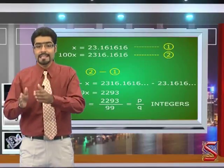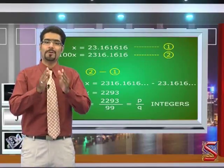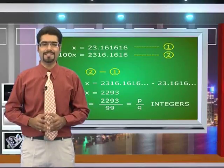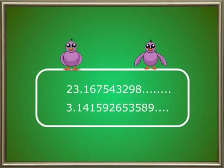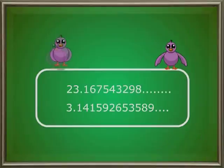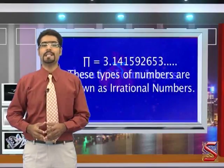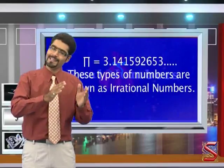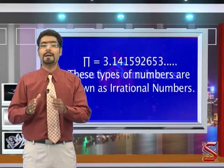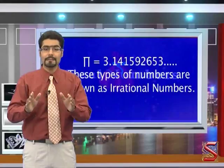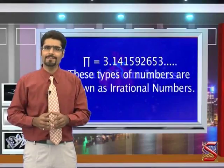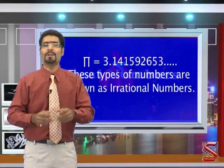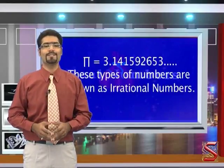Therefore, we can see that these types of decimal numbers also fall in the category of rational numbers. Can you see the difference in these types of numbers with the previously discussed numbers? Unlike the previous case, it doesn't have a particular structure which is repeating. These types of decimals are known as irrational numbers. The number written here is nothing but the value of pi — pi, 22 by 7 — one of the best examples of irrational numbers.